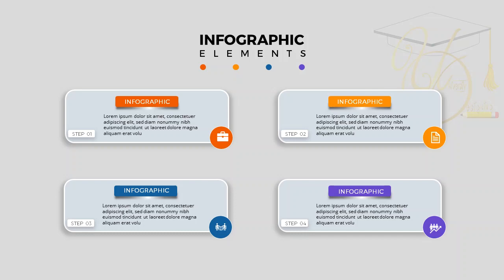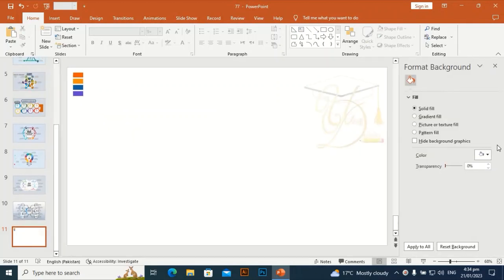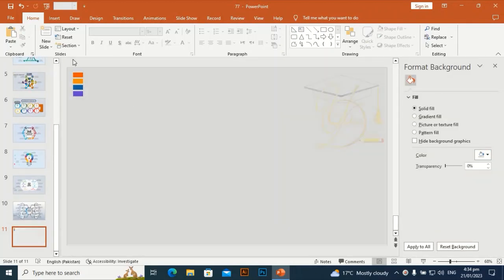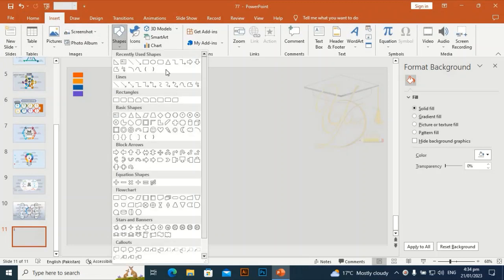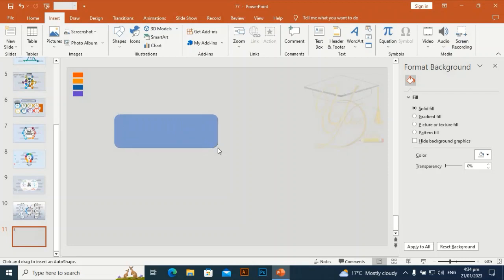Go to Format Background and give it a different color — this gray color. Then go to Insert, take a rounded rectangle, and drag it from left to right like this.